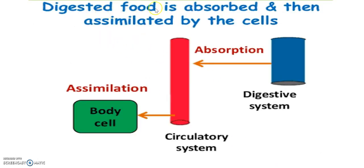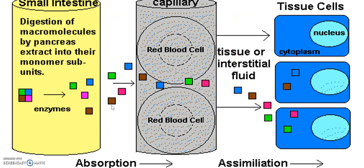After absorption, the simpler forms of food are taken from the small intestine to the circulatory system — the blood. The smaller components of food go into the blood, which transports them to the body cells where assimilation will take place. In the small intestine, digestion of macromolecules by the pancreas and other parts had taken place, and the enzymes broke them down into smaller, absorbable components. These absorbable components enter the blood and are transported to different cells throughout the body.